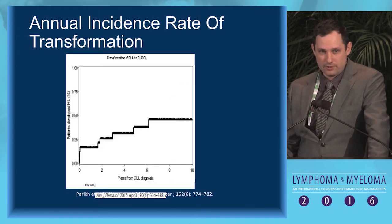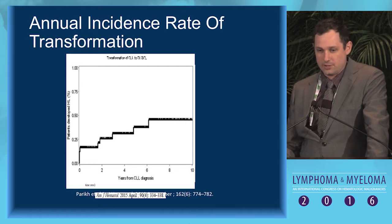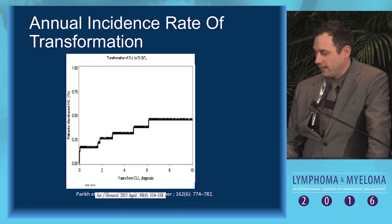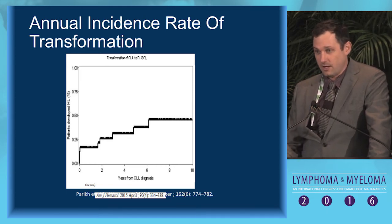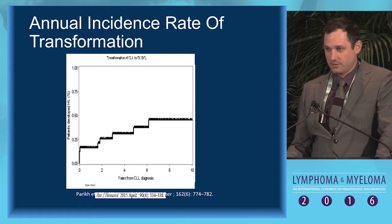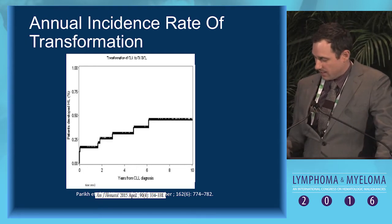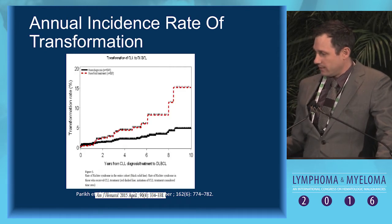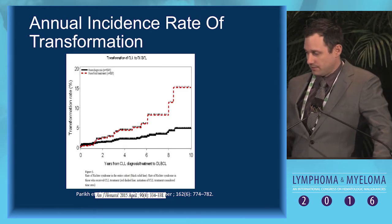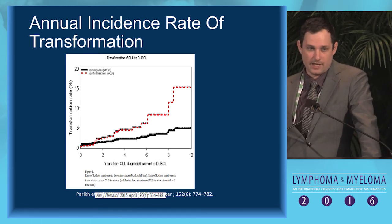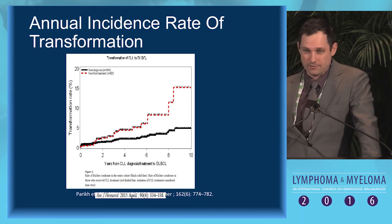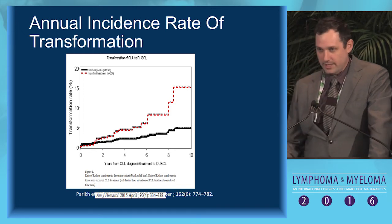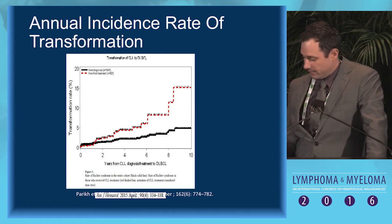The Hodgkin variant Richter's transformation is a much less common entity, with an annual incidence rate of about 0.5% of CLL patients at 10 years. Importantly, in the DLBCL transformation data, about 50% of patients actually transformed during observation without treatment — which highlights the need to identify these people so we can intervene early.